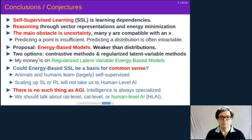Could energy-based self-supervised learning be the basis for common sense? This is our best bet at the moment, possibly. Animals and humans learn largely self-supervised. And scaling up supervised learning and reinforcement learning will not take us to human-level AI. And by the way, there is no such thing as artificial general intelligence. Intelligence is specialized, including human intelligence. It's very specialized. And so I think it makes more sense to talk about rat-level, cat-level, or human-level intelligence rather than AGI. Thank you very much.